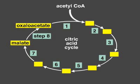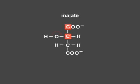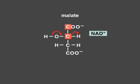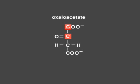The next step produces the final NADH molecule. In this reaction, malate is converted to oxaloacetate. The carbon carrying the hydroxyl group is converted to a carbonyl group. This reaction releases hydrogen atoms and converts NAD+ to NADH, releasing a proton, and producing the four-carbon oxaloacetate.